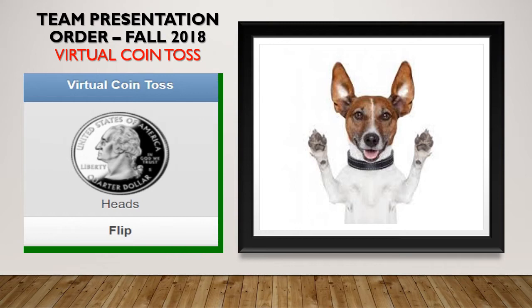I'm going to use this virtual coin toss in order to determine the winner by flipping the coin five times, and the best of five will win. If it is heads, the teams with the highest numbers will end up going first. If it's tails, then the team with the lowest numbers will end up going first.